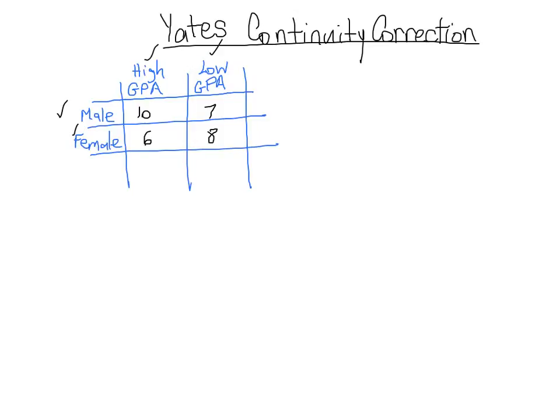Whenever that happens, we have a small amount of values, we want to do the Yates continuity correction in order to reduce the error that could occur in your test.